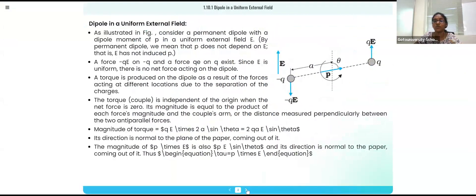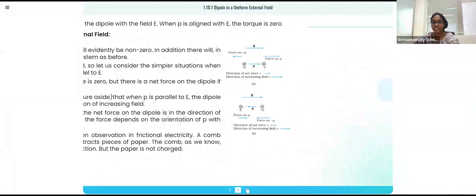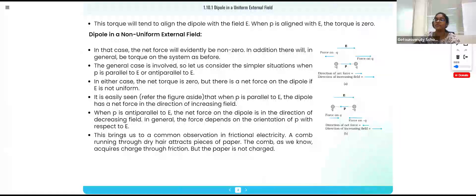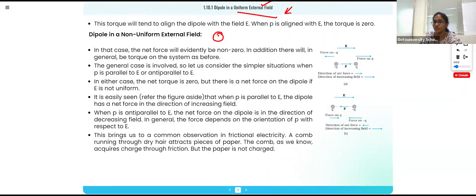We know what a dipole is. When we bring a dipole into a uniform electric field, there will be rotation. The special thing is that when we give a non-uniform external field, it will not give the proper result — we can't determine which direction it will rotate. So we usually go for a uniform external field only, which gives us proper rotational behavior.